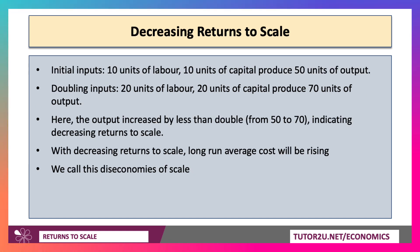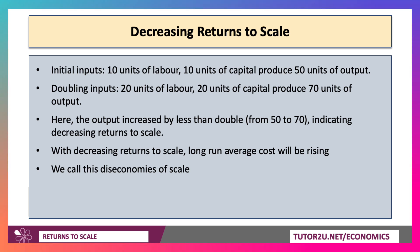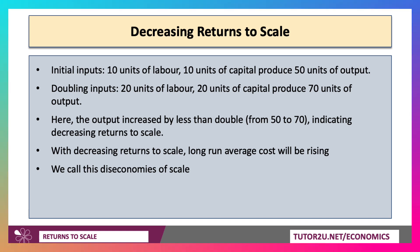On the other hand, we might double the input again. Initially, 50 units of output from 10 units of labour and capital. We double our inputs, but output only goes up to 70. So the increase in output is less than double, indicating decreasing returns to scale. In the exam, please don't use the word diminishing — that's a short-run idea. The concept is decreasing returns to scale.